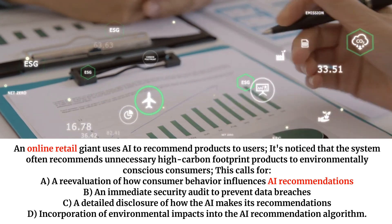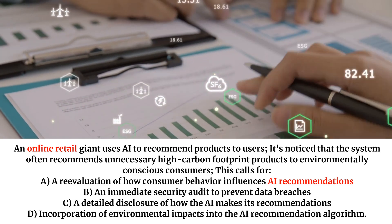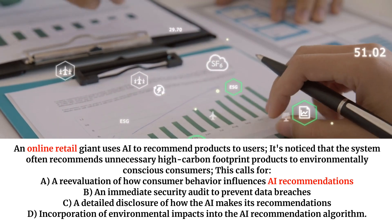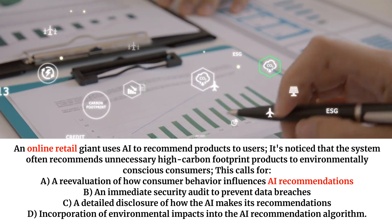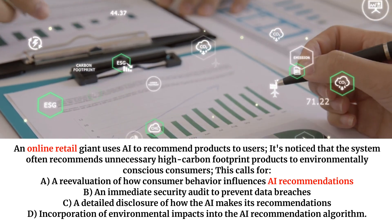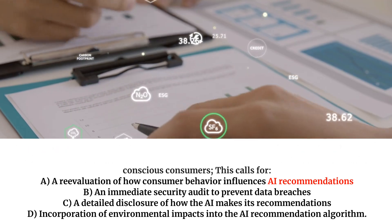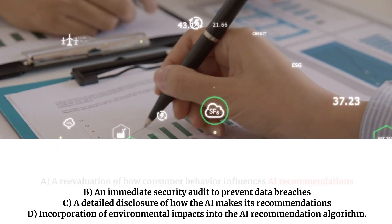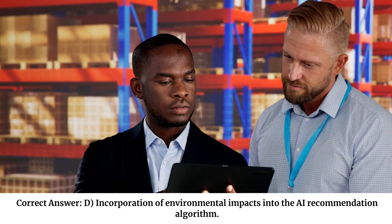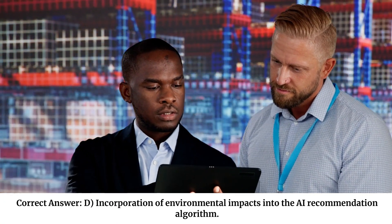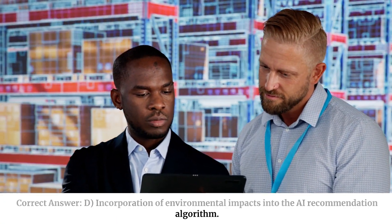This calls for: A. A re-evaluation of how consumer behavior influences AI recommendations. B. An immediate security audit to prevent data breaches. C. A detailed disclosure of how the AI makes its recommendations. D. Incorporation of environmental impacts into the AI recommendation algorithm. Correct answer: D — Incorporation of environmental impacts into the AI recommendation algorithm.